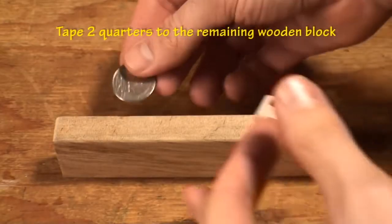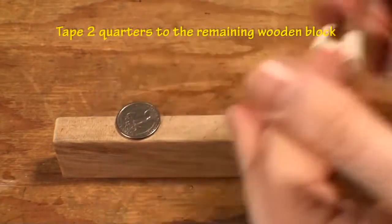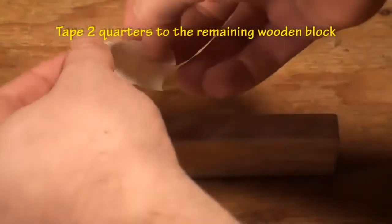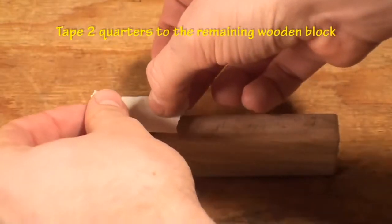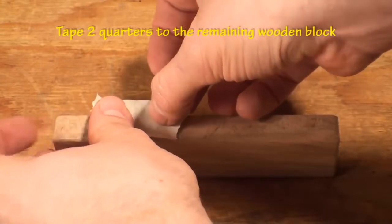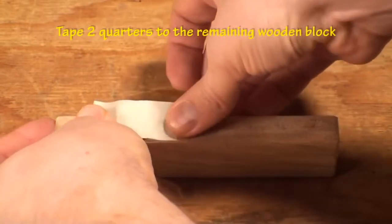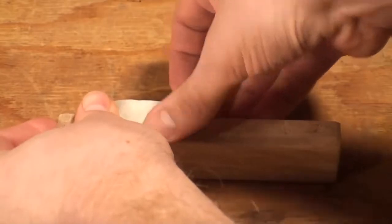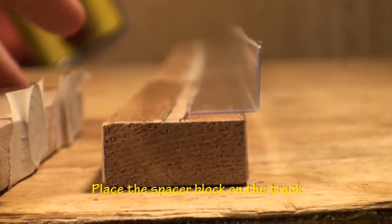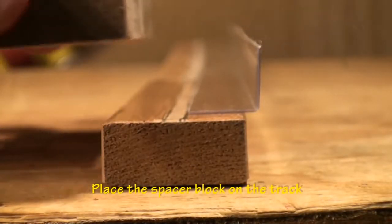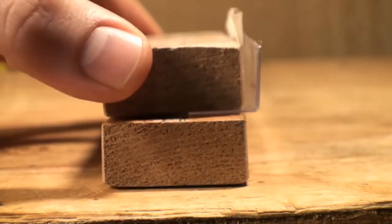Take the remaining wooden block and tape the two quarters to one of the sides of the block. Before placing the last three plastic angles, place the block with quarters on the track.